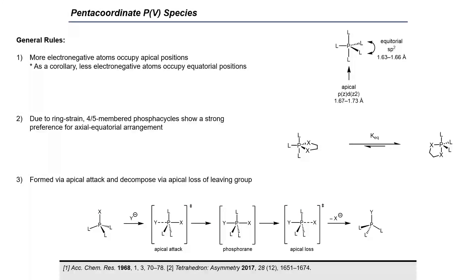Now that we have introduced pentacoordinate phosphorus-5 compounds by discussing their intermediacy in phosphorus substitution chemistry, it will aid our understanding to discuss the reactivity of these compounds and their general behavior. Pentacoordinate phosphorus-5 compounds, often referred to as phosphoranes, have been the subject of research in organic chemistry. These species possess a trigonal bipyramidal geometry, with two substituents occupying the apical positions and three substituents occupying the equatorial positions of the bipyramid.